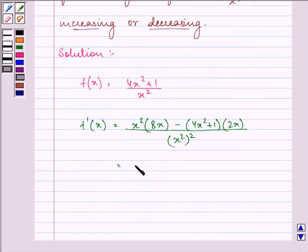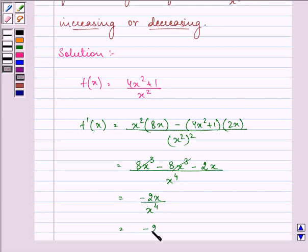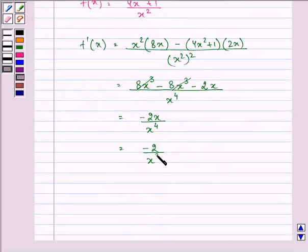This equals (8x³ - 8x³ - 2x)/x⁴, which further simplifies to -2x/x⁴, that is -2/x³.